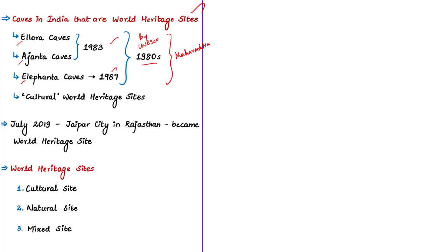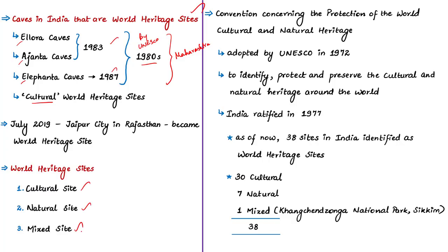Recently, on 6th July 2019, seven cultural sites worldwide were inscribed on UNESCO's World Heritage List, one of which is from India — Jaipur city, the capital of Rajasthan. Know that UNESCO classifies heritage sites into three categories: cultural site, natural site, and mixed site. In order to preserve World Heritage Sites, UNESCO has an international treaty called the Convention Concerning the Protection of the World Cultural and Natural Heritage, adopted by UNESCO in 1972.